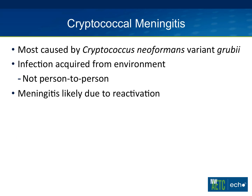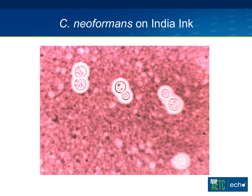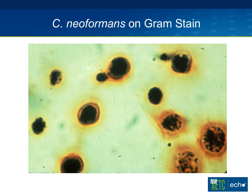He had cryptococcal meningitis — not a surprise. In HIV, most cases are caused by the Grubii variant, acquired from the environment, not person to person, and meningitis is usually due to reactivation of previously acquired infection. On India ink preparation, the main virulence factor is the capsule, which excludes the ink. You can tell these organisms are yeast because they're budding. The CSF organism burden in cryptococcal meningitis and HIV can be so high that you can see the organism on gram stain.